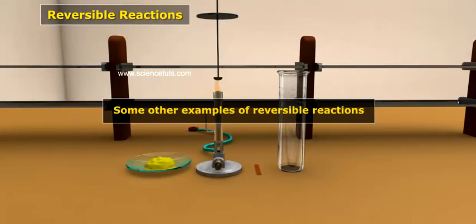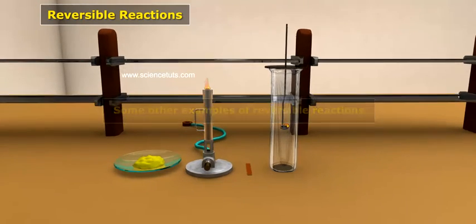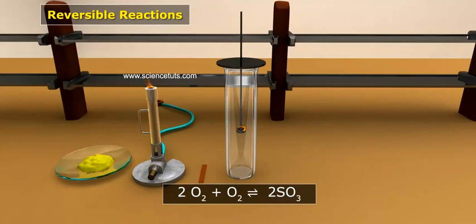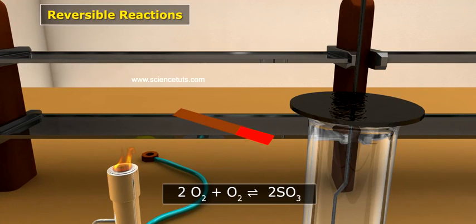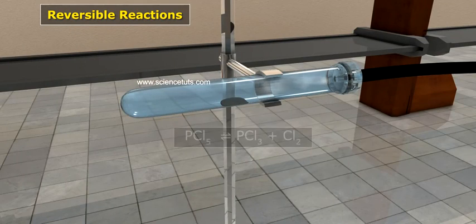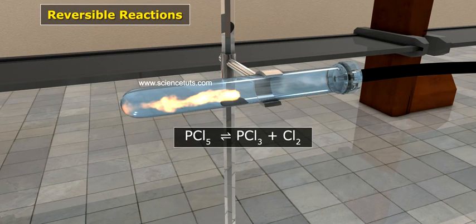Some other examples of reversible reactions are 2SO2 plus O2 is reversible to 2SO3. And, BiCl5 is reversible to BiCl3 plus Cl2.